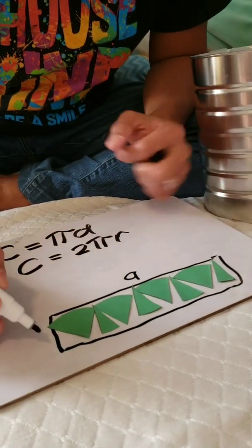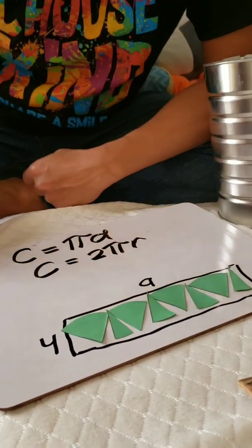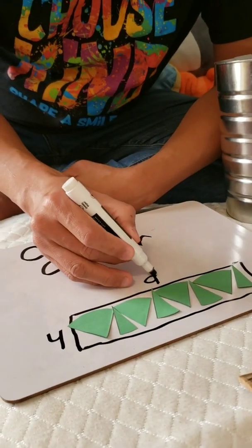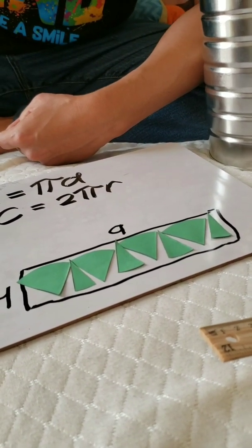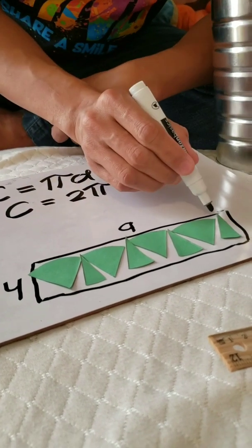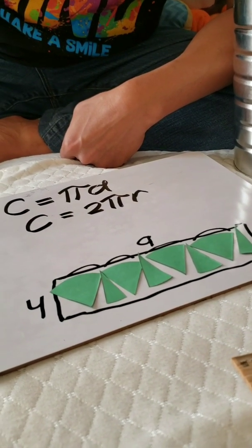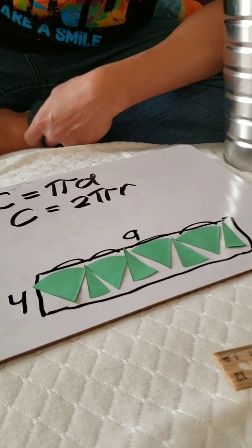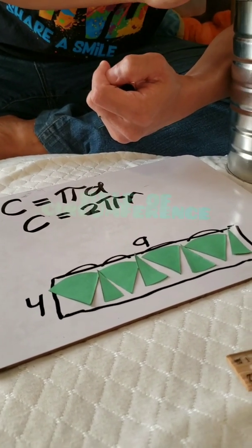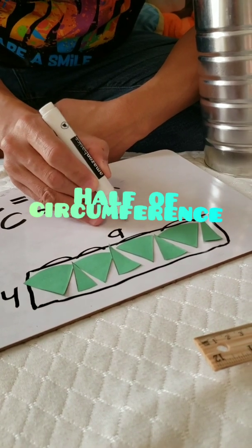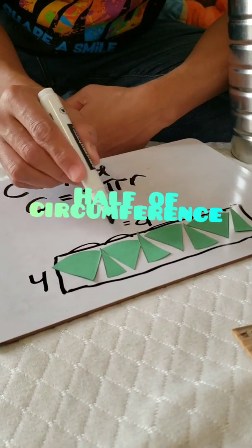So base times height. Now, remember that our base here from the original circle is actually half of the circle. Yana, is it half of the circle? This, this, plus this, plus this, plus that. Is that half of the circle? That's half of the circle. So if that's half of the circle, the distance around the circle, then you can say this is half of the circumference.